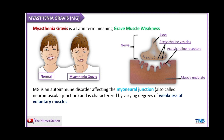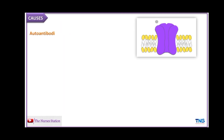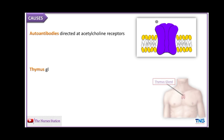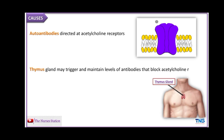Myasthenia gravis affects more women than men. The causes include autoantibodies directed at acetylcholine receptors. In most cases, the thymus gland is believed to be the site of production of these autoantibodies. In rare cases, children born to a mother with myasthenia gravis may also have the disease.